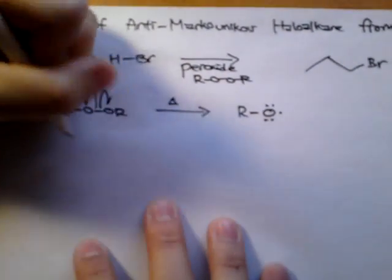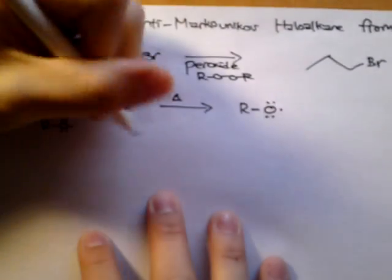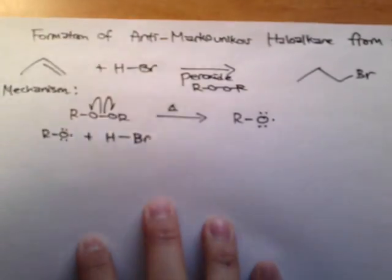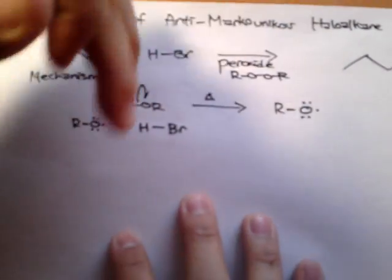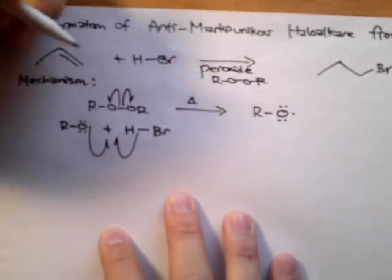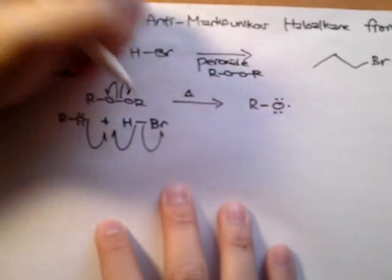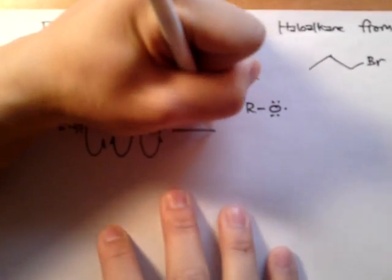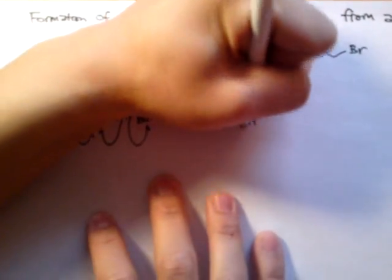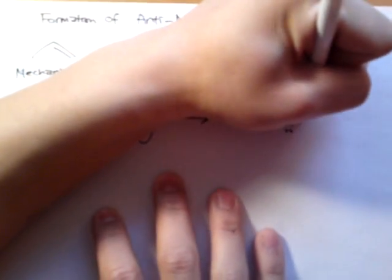After we get the radical, this radical is going to attack a HBr molecule. The radical would attack this and form another radical. What happens is this radical right here would abstract the H, and at the same time will form a bromine radical. So we'll end up with an alcohol and the bromine radical.